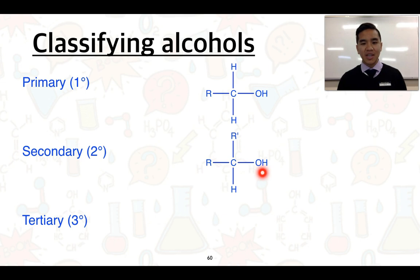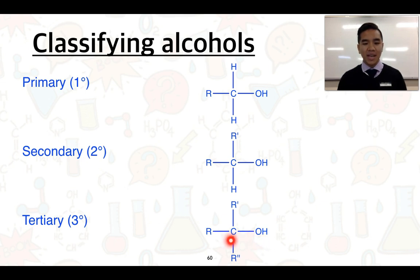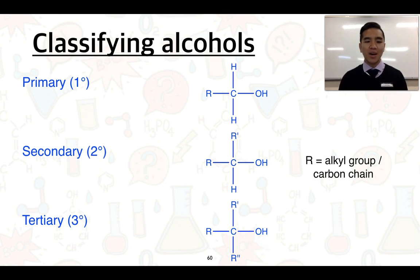This is different to a secondary alcohol: the hydroxyl group is bonded to a carbon that is itself bonded to two other carbon atoms, or two other hydrocarbon chains. That is what makes it a secondary alcohol. Finally, with a tertiary alcohol, the carbon bonded to the hydroxyl group is itself bonded to three other carbon atoms. You just determine how many carbons that carbon is bonded to, and that determines the classification.